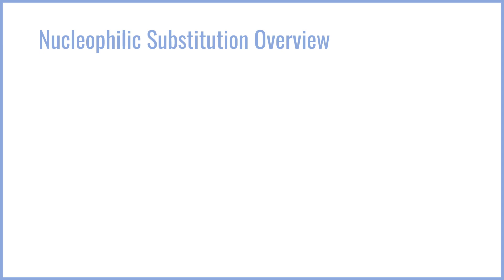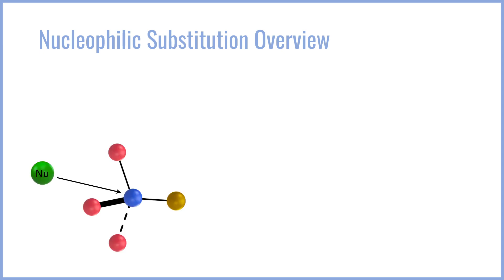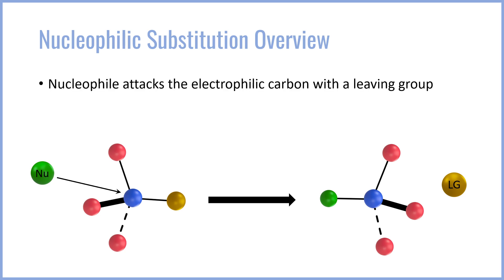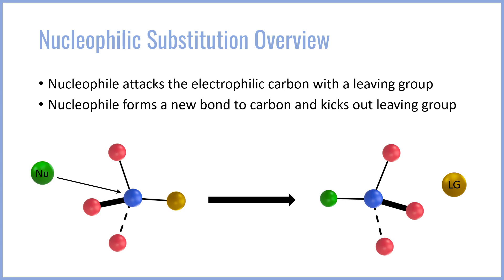First and foremost, let's go over what exactly a nucleophilic substitution is. Consider that we have a tetrahedral carbon, shown in blue, with a leaving group represented by the gold atom. The nucleophile can go ahead and attack that blue carbon — an electrophilic carbon — and kick out the leaving group. The carbon will now be bonded to the nucleophile, and the leaving group will be separated as LG⁻, some anionic species. In effect, the nucleophile substitutes the leaving group on the carbon.